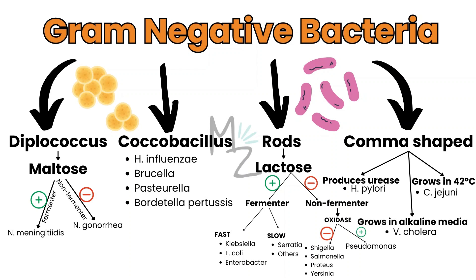Rods are further subdivided based on lactose fermentation. If bacteria ferment lactose, they are fast or slow fermenters. Fast ones include Klebsiella, E. coli, and Enterobacter. Slow ones include Serratia and others. Non-lactose fermenting bacteria are further subdivided based on the oxidase test. If a bacterium is oxidase positive, it's Pseudomonas. If bacteria are oxidase negative, they are Shigella, Salmonella, Proteus, and Yersinia. Comma-shaped bacteria are further subdivided: if a bacterium produces urease, it's H. pylori; if it grows at 42°C, it's Campylobacter jejuni; and if it grows in alkaline media, it's Vibrio cholerae.